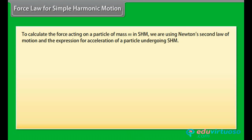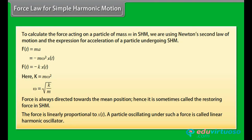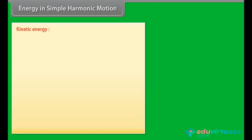Force law for simple harmonic motion: using Newton's second law, F(t) = Ma. Substituting the expression for acceleration gives F(t) = −Mω²x(t) = −Kx(t), where K = Mω², so ω = √(K/M). The force is always directed towards the mean position and is called the restoring force. Since the force is linearly proportional to x(t), a particle oscillating under such a force is called a linear harmonic oscillator.